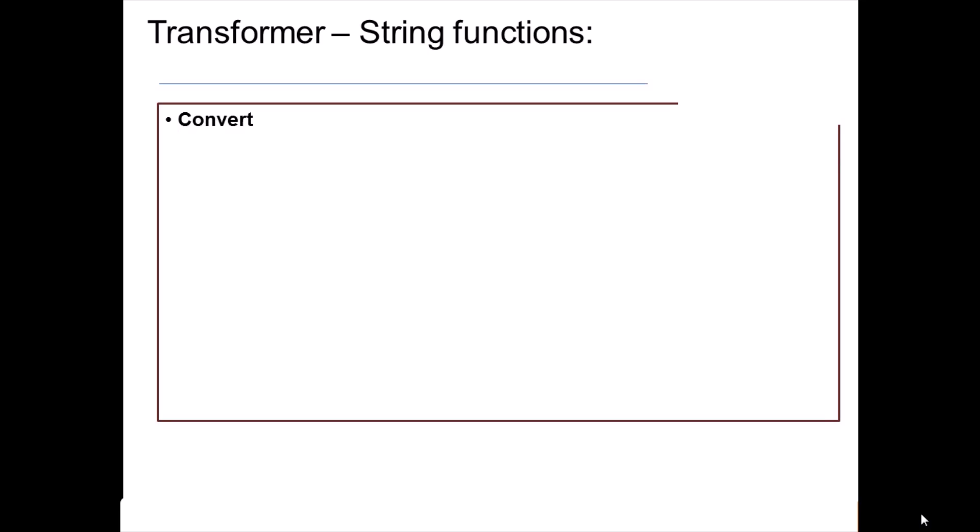Let's start with the string functions. String functions, as the name says, perform operations on string data types. The first function we're going to look at is the convert function. Convert, as the name suggests, is a function used to convert a character to some other character. Let's say our input column A has the value 'Tom-mark'. Now I want to convert the hyphen into a colon. I should go to my derivation cell, double-click, then right-click on it, and go to the functions property.